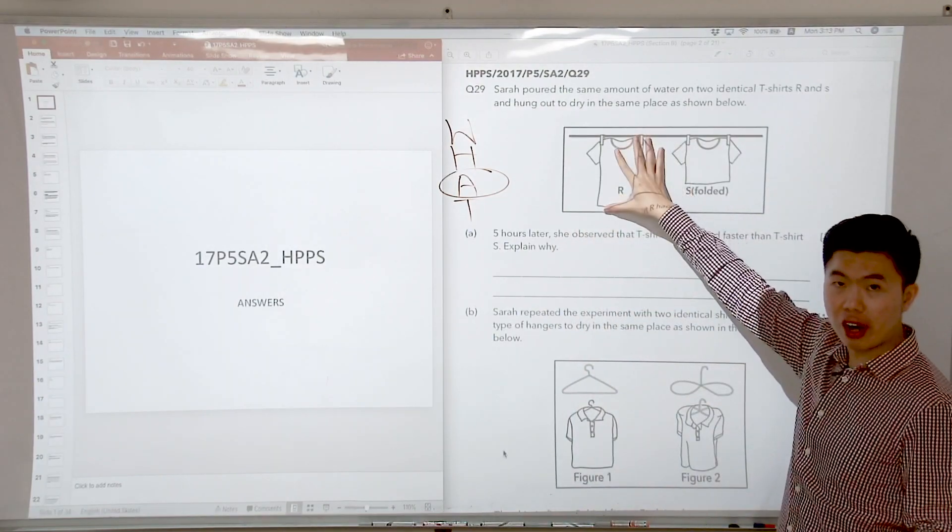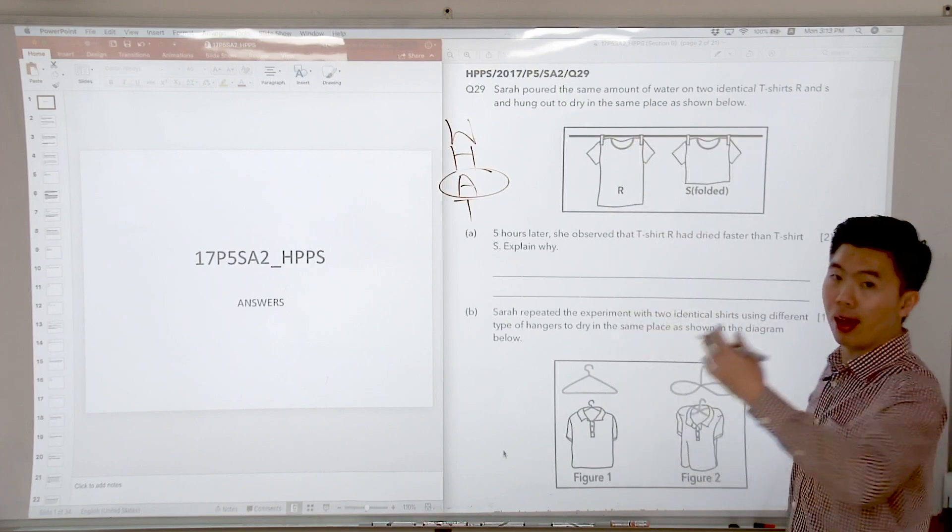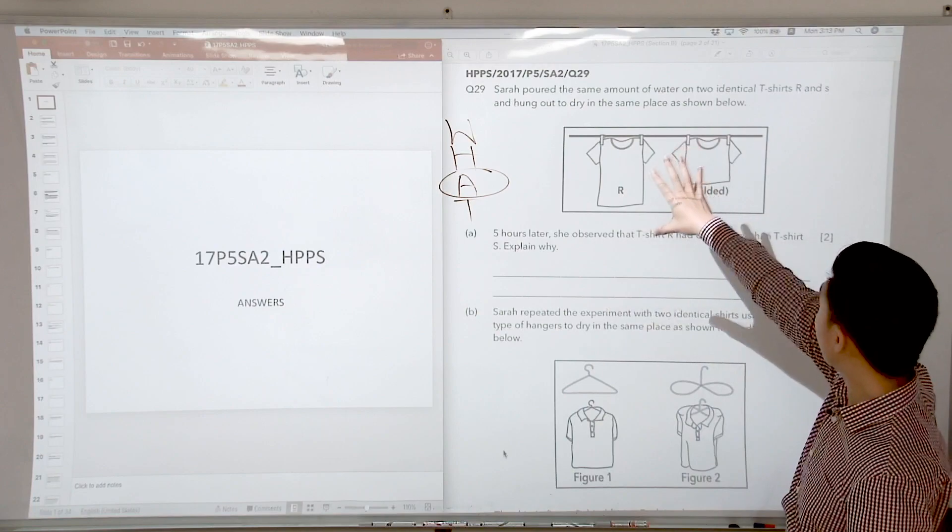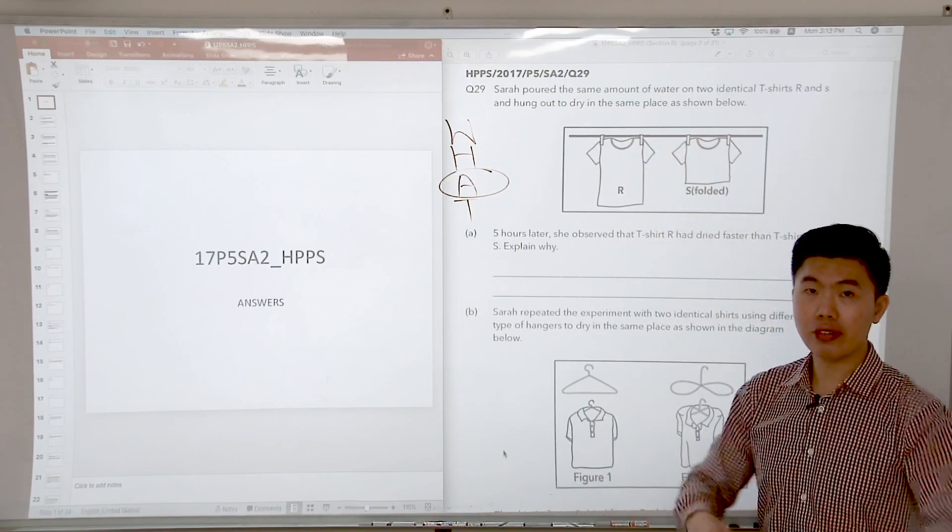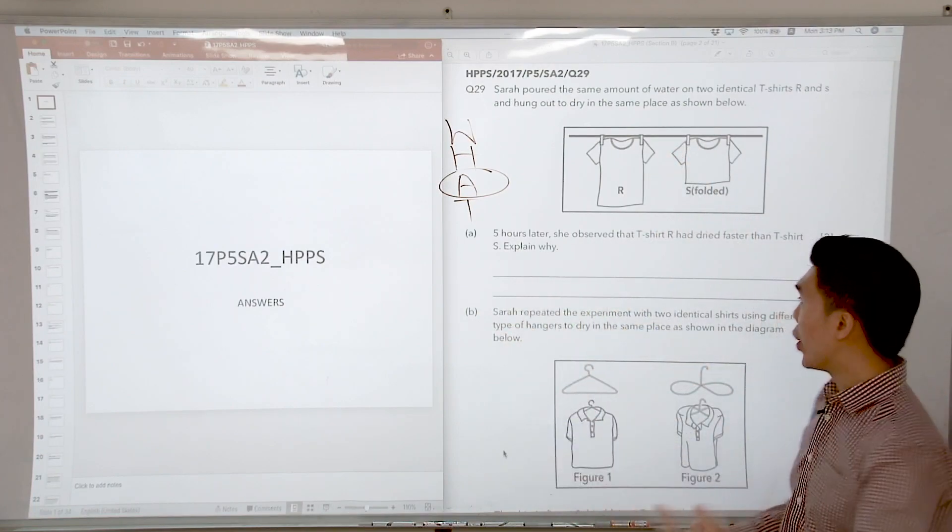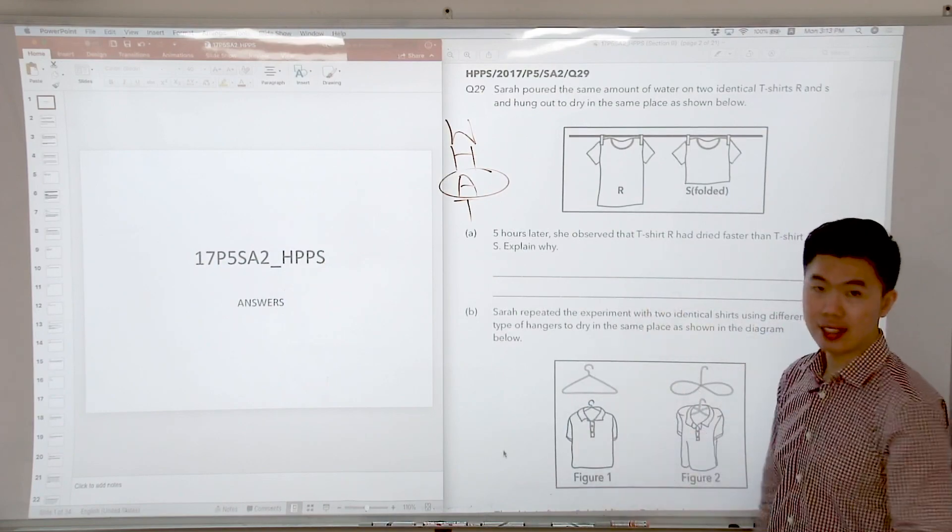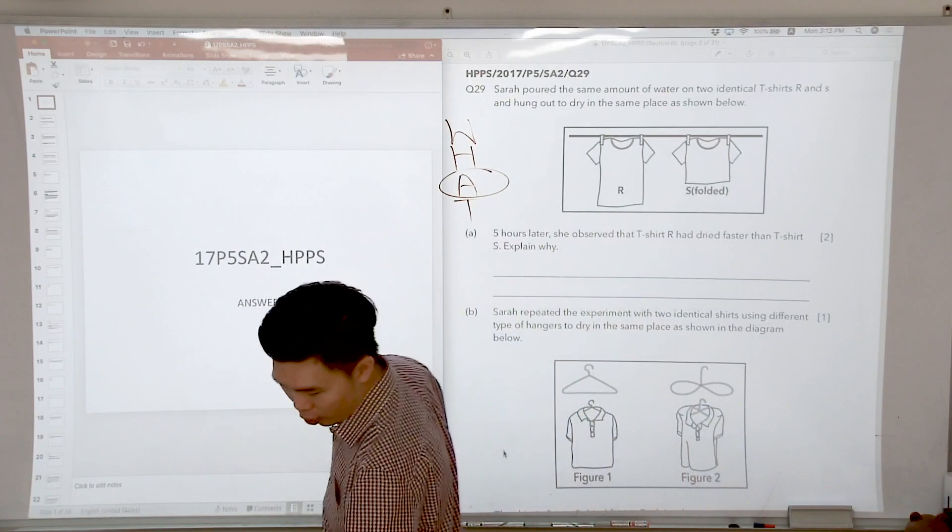Why? Because T-shirt R has a larger exposed surface area. So the water in the T-shirt gains heat faster from the warmer surroundings or you can say gains heat faster from the sun to evaporate faster. So this is the answer for part A.